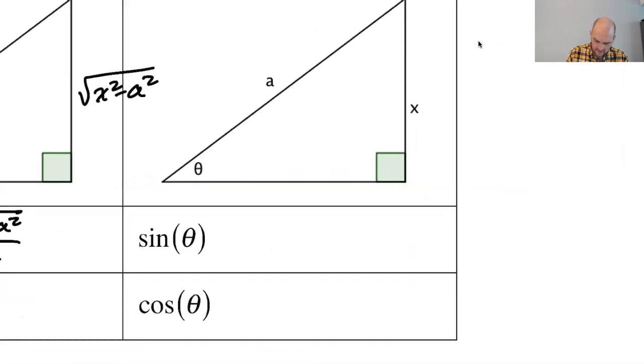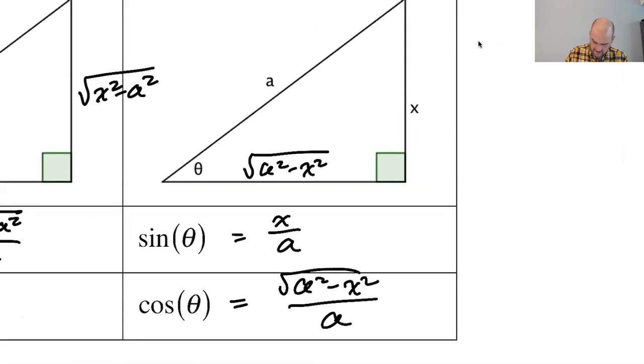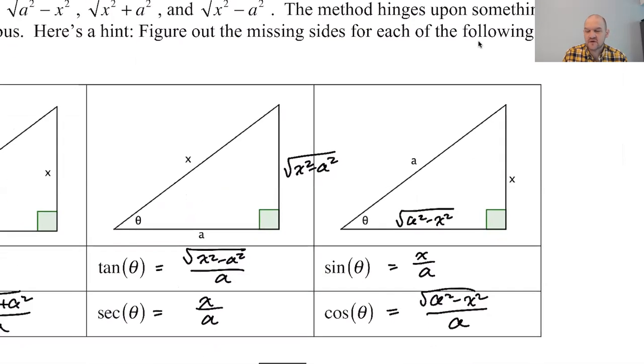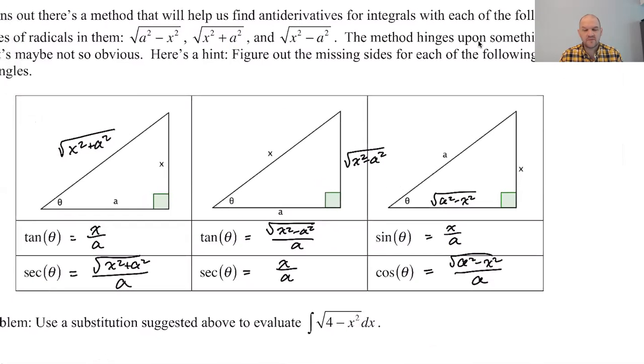And then here we're missing this, which is square root of a squared minus x squared. So sine is x over a. Cosine is the square root of a squared minus x squared over a. And we're kind of good to go. These are the substitutions we're going to make. But don't memorize this, just know to draw a triangle. That's the idea.